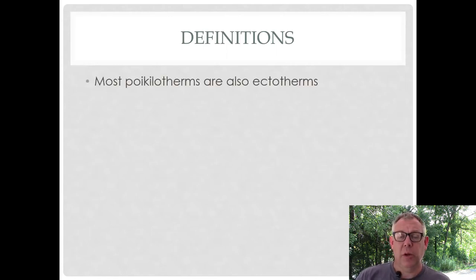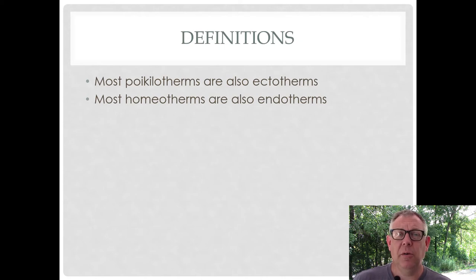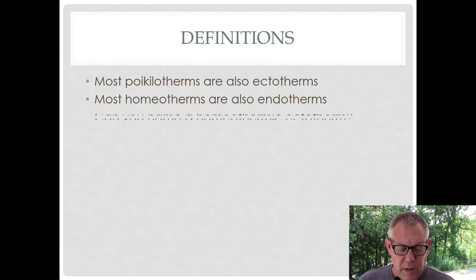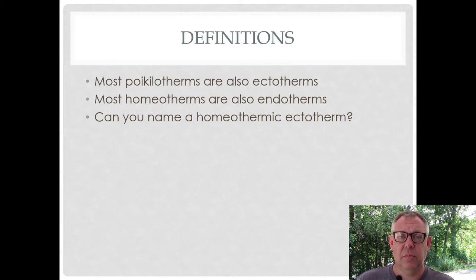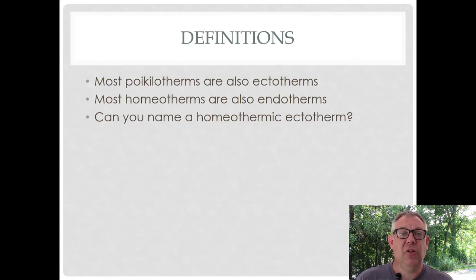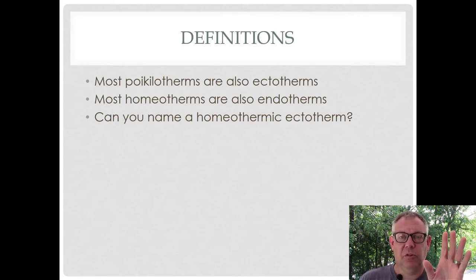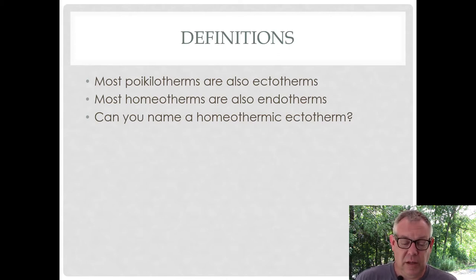Most poikilotherms are also ectotherms and most homeotherms are endotherms, that's why these terms slip and are used interchangeably. But technically, they're not interchangeable. For example, can you name a homeothermic ectotherm? Homeothermic means the body temperature doesn't vary, but ectotherm means they get their heat from outside their body — from the environment. Say you had a fish that lived in the ocean near the equator. Fish are ectotherms, but if this fish lives in an environment that doesn't vary, like at the equator, its body temperature would not vary. So it's a homeotherm.